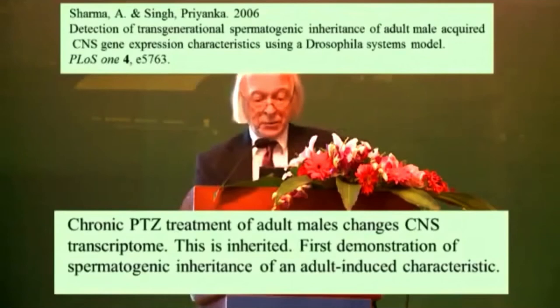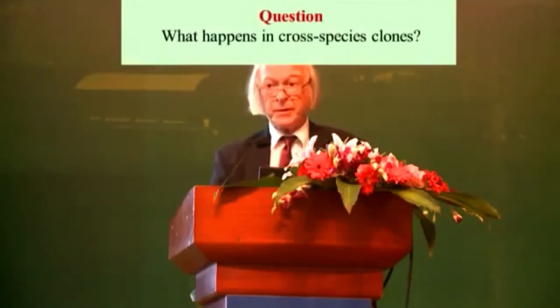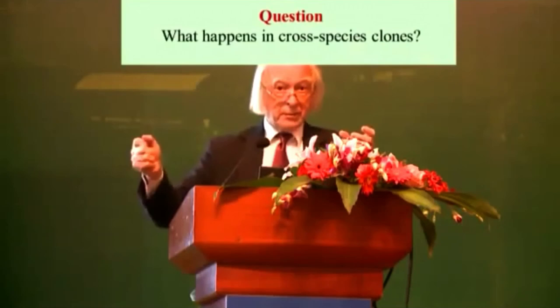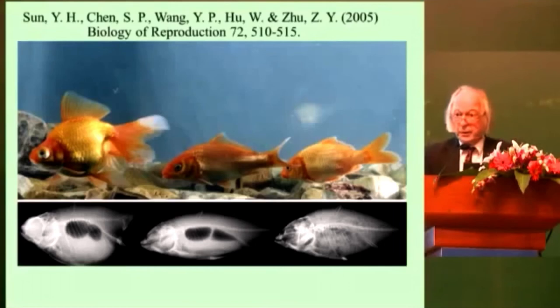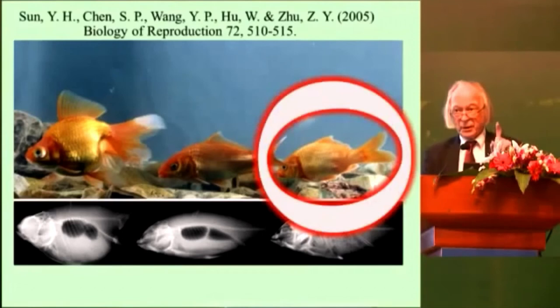So my third conclusion is that environmentally induced changes can be inherited. The question is: what happens in cross-species clones? Cross-species clones would be very interesting if they worked, because if you put the DNA of one species into the egg cell of another, you should get the animal from which the DNA came — full stop. That is the modern synthesis. So let's see what happens. This is a beautiful set of experiments done in Wuhan at the Fish Institute here in China, by Sun and his colleagues. They took a carp and a goldfish — they took the nucleus of the carp and put it into the fertilised but enucleated egg cell of the goldfish. And what you get is an animal that is in between. You don't get just a carp.